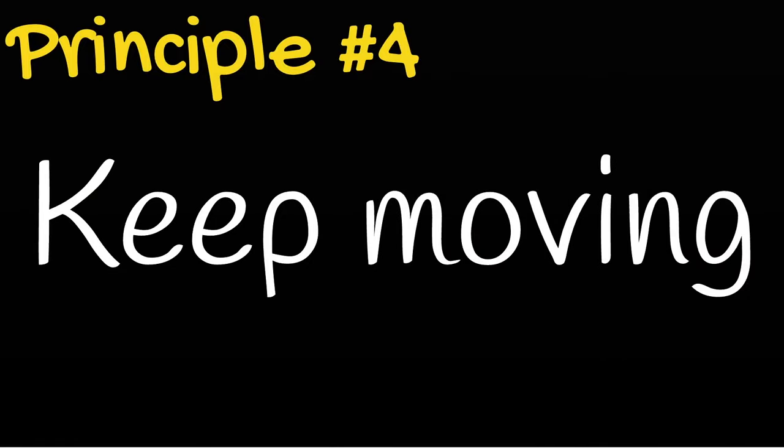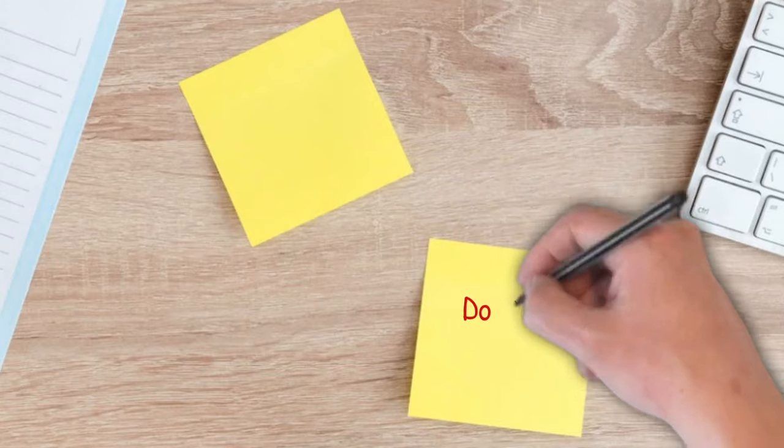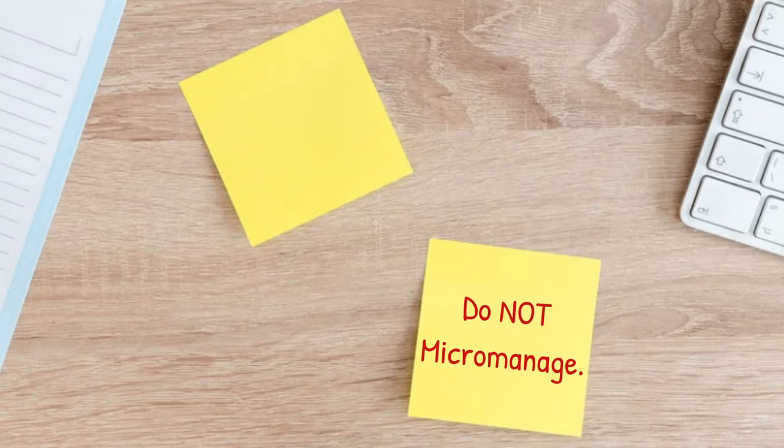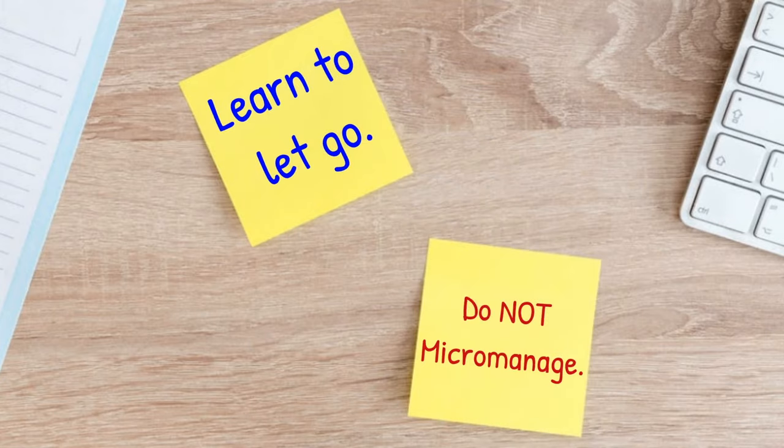Principle number four: keep moving. Don't try to micromanage everything. You will lose control in the long run. What you have to do is let go with the chaos that presents itself to you. Keep moving, changing your appearances to fit the environment. Don't let anything disrupt your flow.